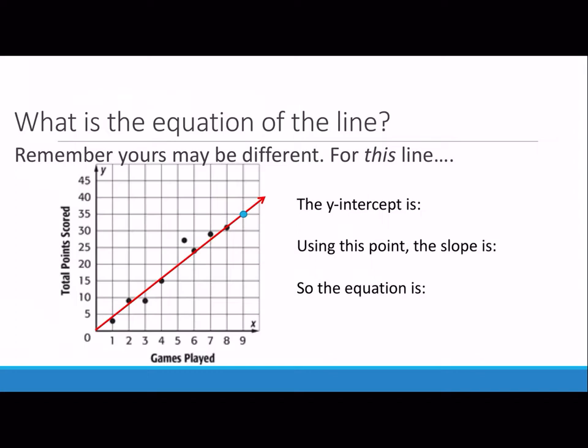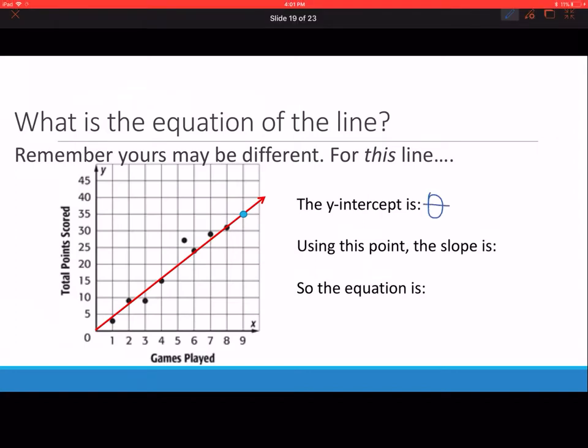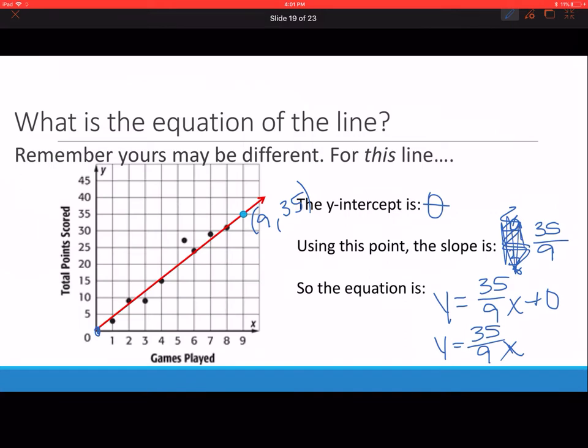You should have drawn your line of best fit for the next one. Try and write an equation for your line and see how close it comes to my answer. How did I find my slope? This is 9 comma 35. I slip and slide. I also use the origin, which is 0 comma 0. So 35 over 9. Because it's plus 0, I can simplify my equation to just this.